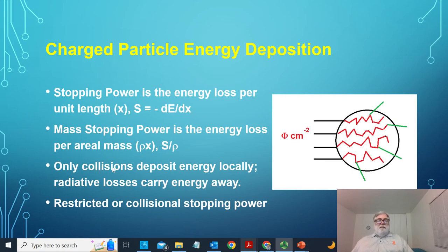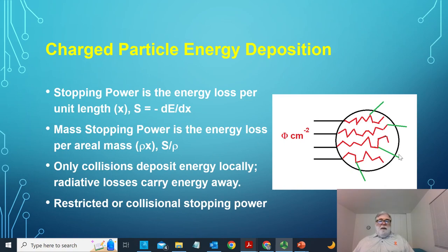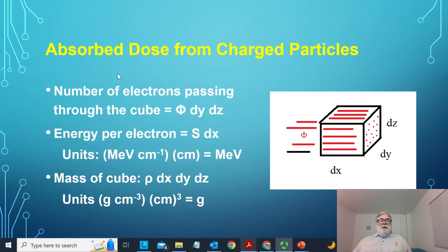Only collisional losses deposit energy locally. Radiative losses carry energy away to other areas. So if we have a small, infinitesimal volume that we're trying to assess how much energy is being deposited per unit mass, when there are radiative losses — Bremsstrahlung events as the electron moves along its path — that energy is carried out as a photon, out of the small volume, and doesn't add to the energy deposited locally.